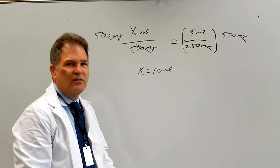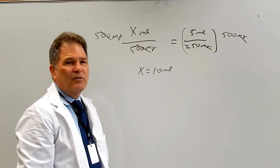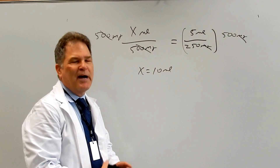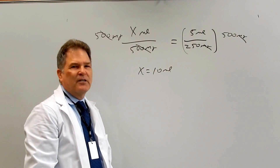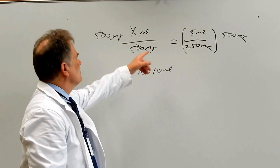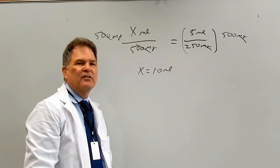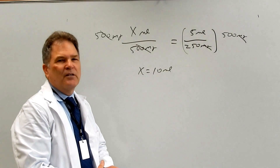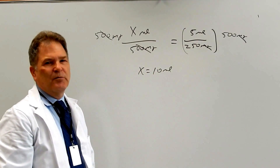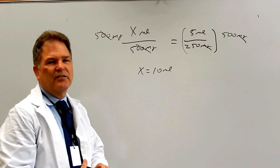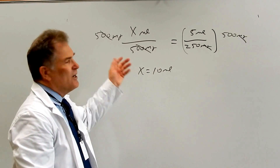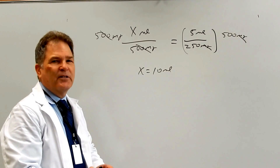Whichever way you feel comfortable with, go ahead and use it. Dimensional analysis is a much more powerful method because you can do more complex problems all in one step. Using the ratio proportion method, you have to break the problem into multiple steps if there are several conversions. We'll do something a bit more complicated to show the difference between the two methods.